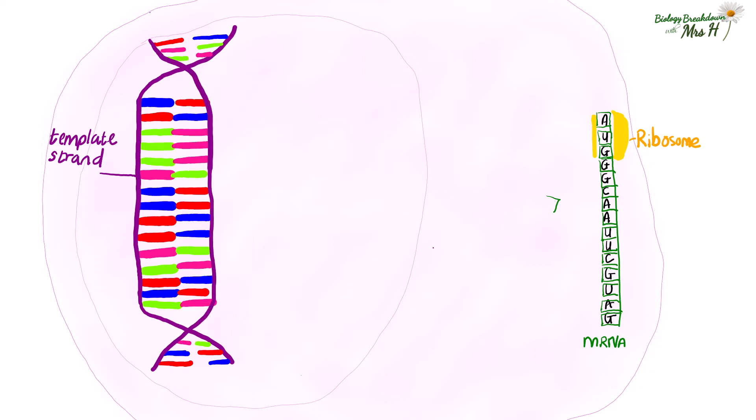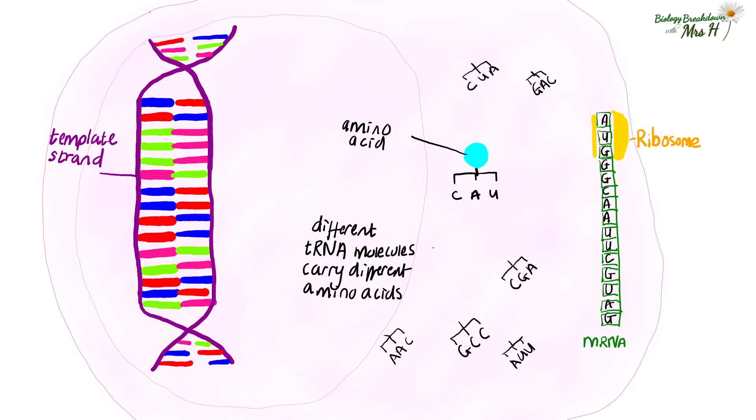Also in the cytoplasm are some other molecules called tRNA and these have a triplet of bases and they can carry an amino acid. There are lots of different tRNA molecules in the cytoplasm carrying different amino acids depending on the tRNA triplet code, so three bases for one amino acid.